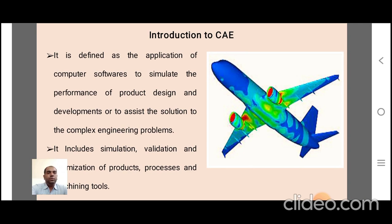Basically, CAE or Computer Aided Engineering is defined as the application of computer software to simulate the performance of a product design for development, as well as to assist in solving complex engineering problems. Classical methods are not sufficient to solve complex engineering problems, so newly adopted computer-implemented software techniques are used. It includes simulation, validation, and optimization of products, manufacturing processes, and machining tools.